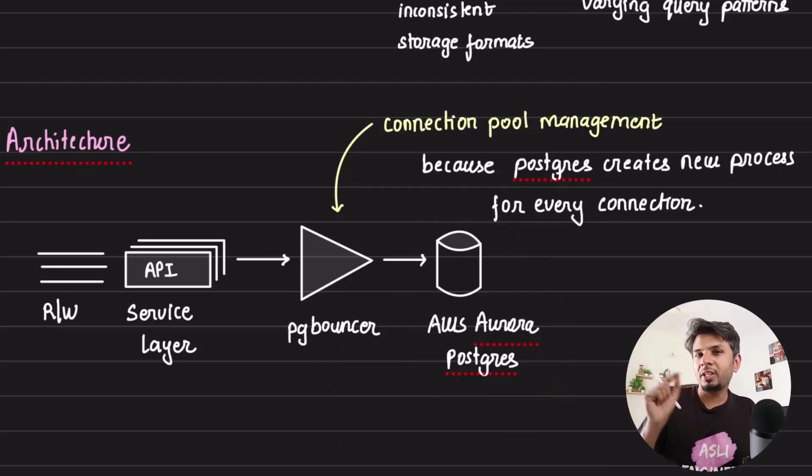Why connections are expensive on Postgres is because whenever a client connects to Postgres, instead of spinning up a thread to handle it, it spins up an entire process to handle it. Because of this, it becomes slightly expensive when there are a large number of connections. So you need someone to manage the connections for you. If you want to deep dive into it, I have a video series on Postgres internals. I'd highly recommend you give it a look.